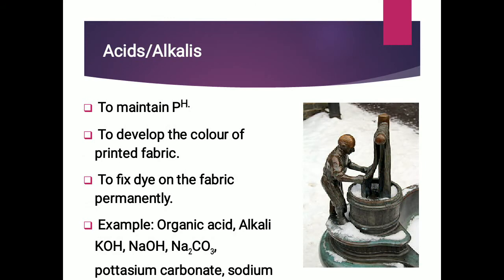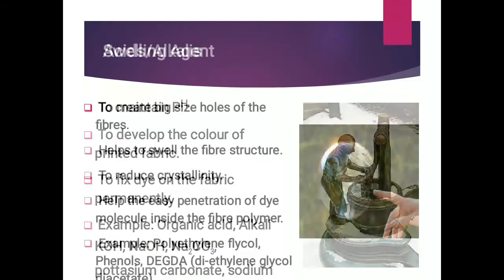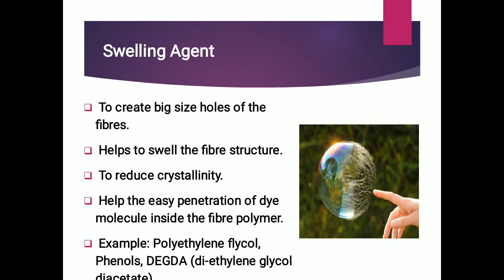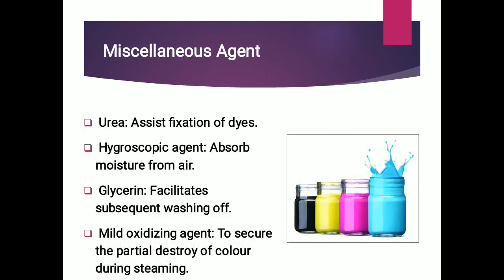Acids or alkalis are used to maintain pH and to fix dye on the fabric permanently. Swelling agents are used to create larger pores in the fabric structure, reducing crystallinity and helping easy penetration of dye molecules inside the fiber polymer. Some other miscellaneous agents may be used, such as urea, hygroscopic agents, glycerin, mild oxidizing agents, and so on.